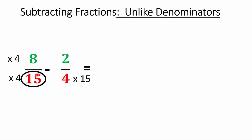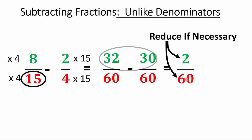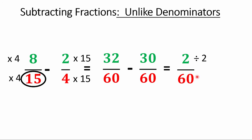Times that by four and times that by 15. Do the same to the numerators — times the top by four and the other top by 15. Write your new numerators. Now subtract the numerators — did you get the right number? Good. Don't subtract the denominators — you've got two out of 60. Now reduce: cut them both in half. One-thirtieth — that's the right answer, that's full marks. Celebrate!